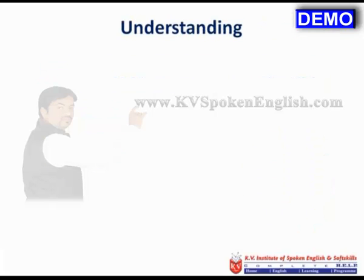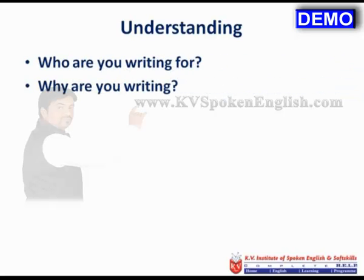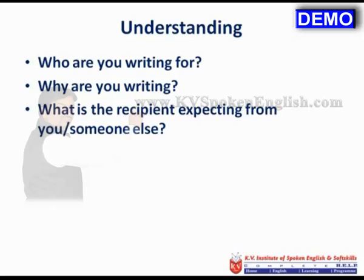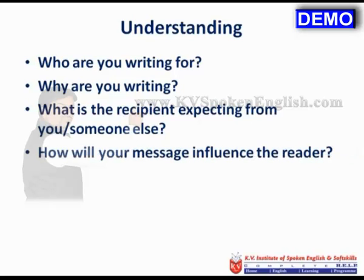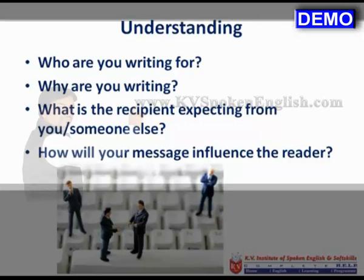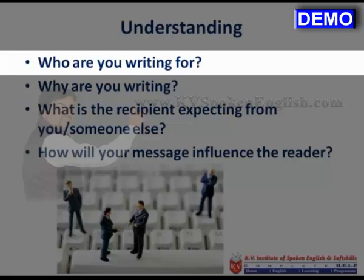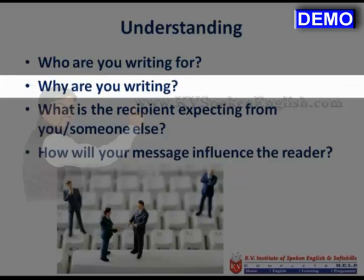Understanding is about knowing your audience. Before trying to understand your audience, you need to ascertain certain factors: who you are writing for, why you are writing, what the recipient is expecting from you, and how your message will influence the reader. Always try to figure out who you are writing for — this will help you place the exact information in the message. Asking yourself why you are writing helps you to be concise, provide correct information, and keep the message related only to the reader and subject.